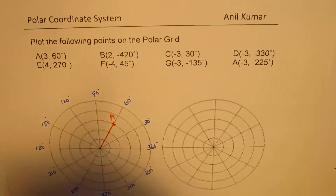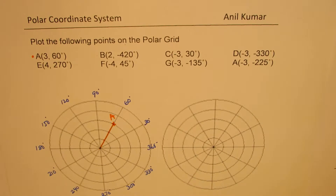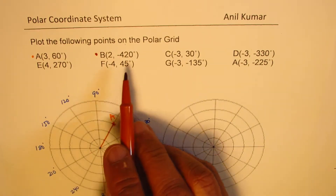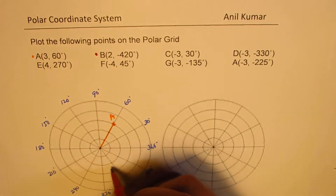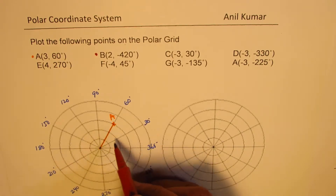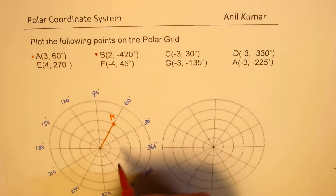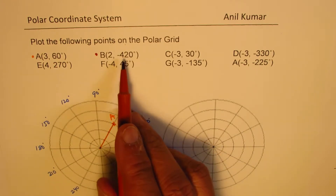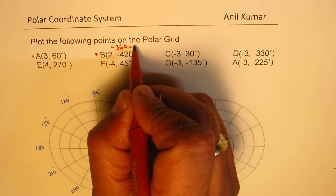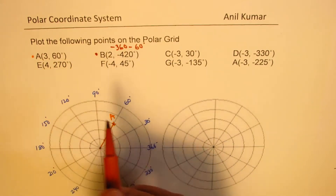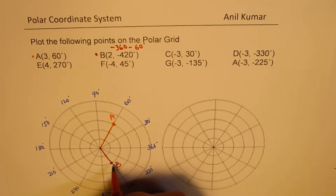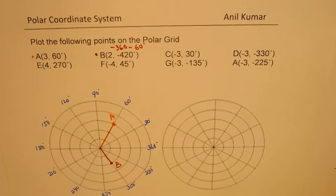Now let's look at point B, which is (2, -420°). Minus 420 means you go one full circle in the clockwise direction — that's 360 — and then 60 more degrees, giving you 420. So that means minus 360 and minus 60 degrees. One full circle and then minus 60 degrees brings you here, and r is 2, so that becomes point B. You go around one full circle and arrive at this point.